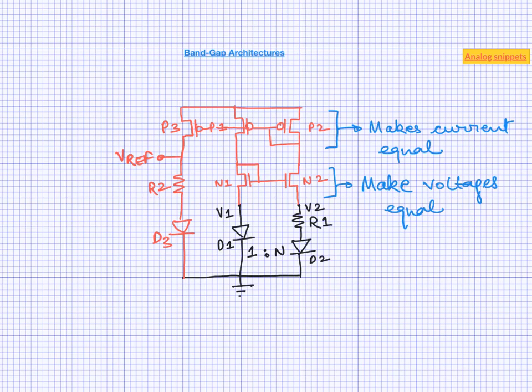So far we have considered adding CTAT and PTAT voltages to generate the reference voltage, but that is not the only option. We can also add PTAT and CTAT currents to generate the reference voltage. We already have the PTAT current; we just need to find a way to generate a CTAT current. We already have the CTAT voltage in the form of V1 and V2, so if we simply place a resistor across these voltages, that resistor will carry a CTAT current — and yes, it is indeed that simple.